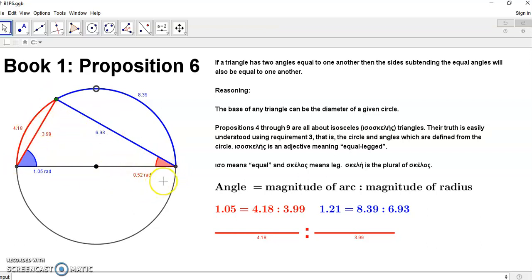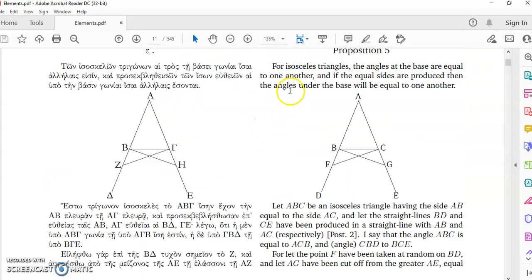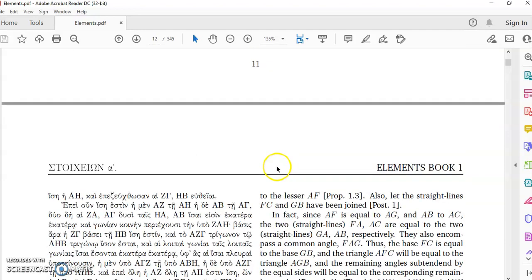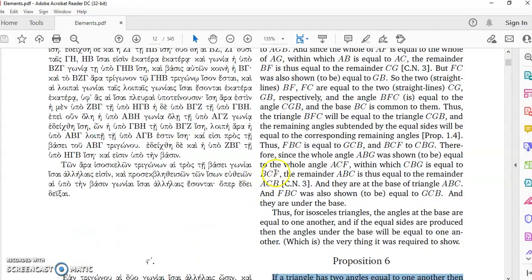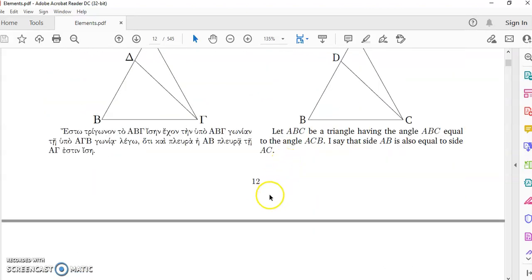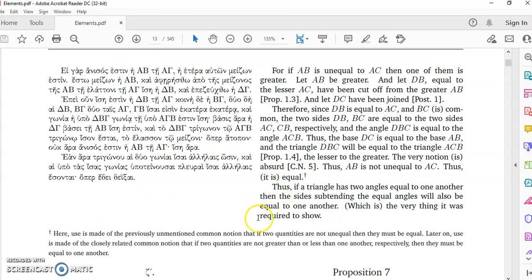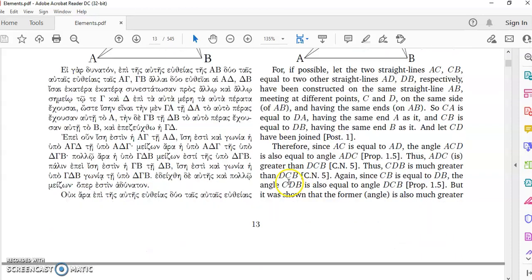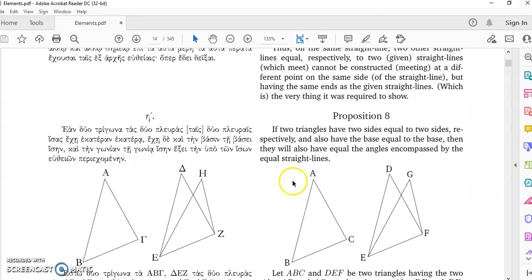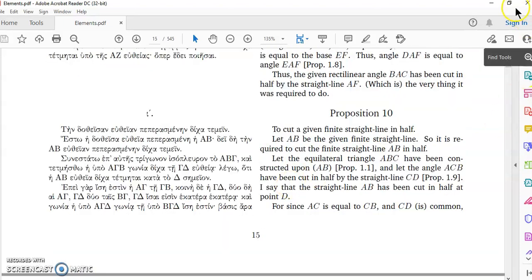Euclid wouldn't have gone to all the trouble that he did in his Elements to describe these things. Look at his proofs, they're very long, obfuscated and not easy to understand at all. A lot of them are proofs by reducing to the absurd. Propositions 4 through 9 are all about isosceles triangles.